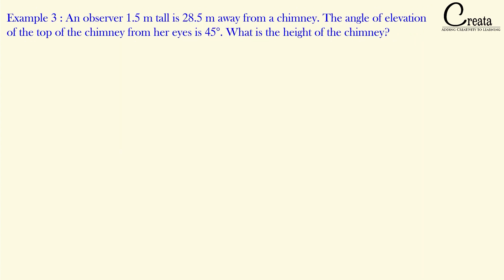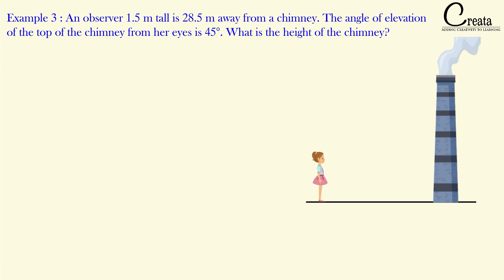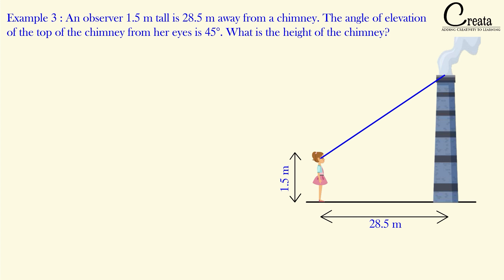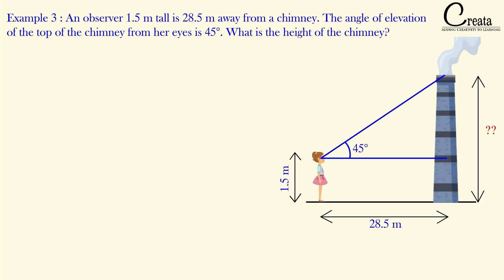Example 3: An observer 1.5 meters tall is 28.5 meters away from a chimney. The angle of elevation of the top of the chimney from her eyes is 45 degrees. What is the height of the chimney? Firstly, we observe the question: a chimney is given, an observer is standing 28.5 meters away, and the observer's height is 1.5 meters — this is important and will be used. The observer sees the top of the chimney at an angle of elevation of 45 degrees. Are you able to observe the right angle triangle in the given scenario?